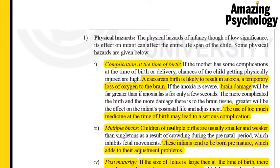The first physical hazard is complications at the time of birth. If a normal delivery doesn't happen and a cesarean is opted for, there is a chance of anoxia occurring. Anoxia means a temporary loss of oxygen to the brain. The child is used to receiving oxygen from the mother's umbilical cord, so when the cord is severed during a cesarean birth, sometimes the child is not able to quickly take a breath, resulting in anoxia. If more seconds pass before the child breathes, more severe brain damage can occur. Using too much medicine during birth can also result in serious complications.